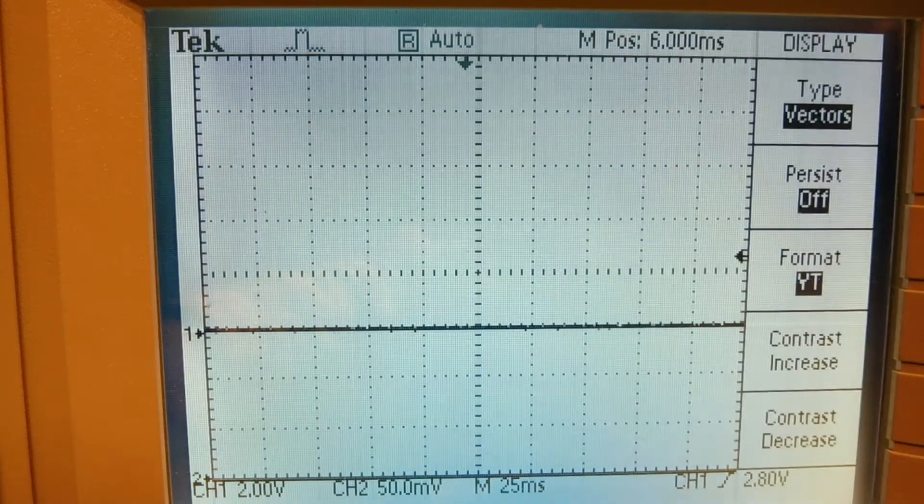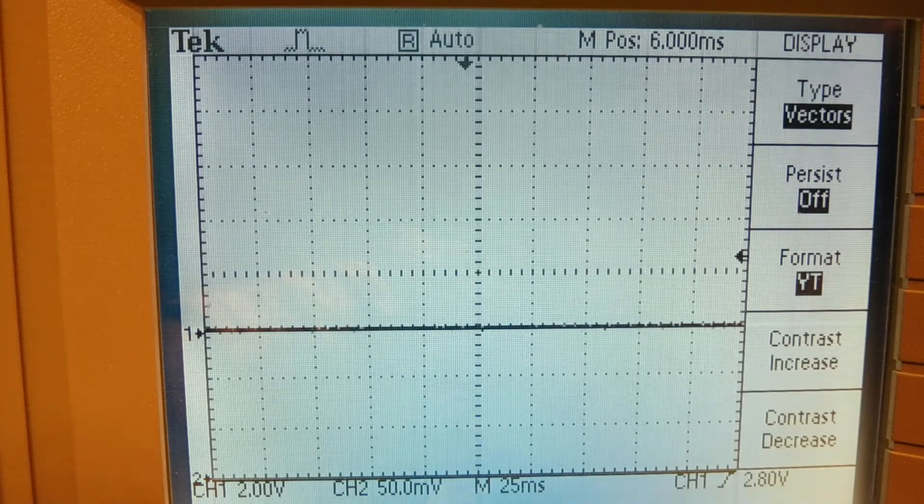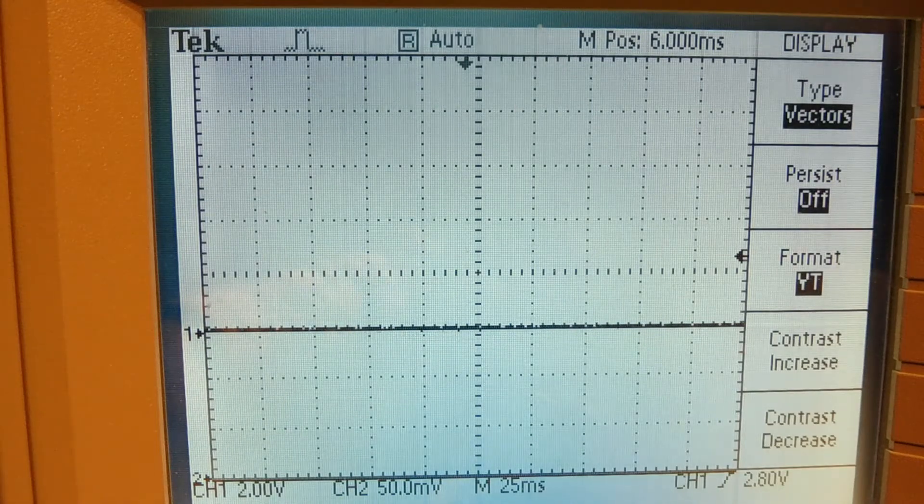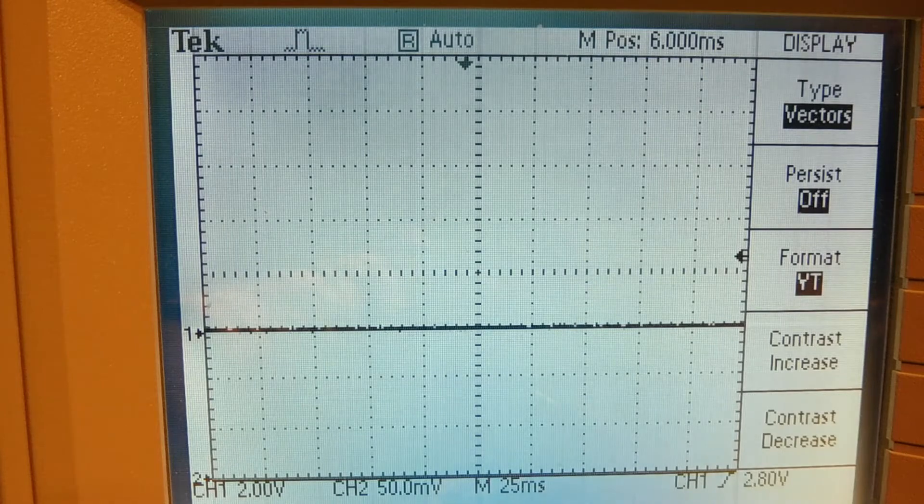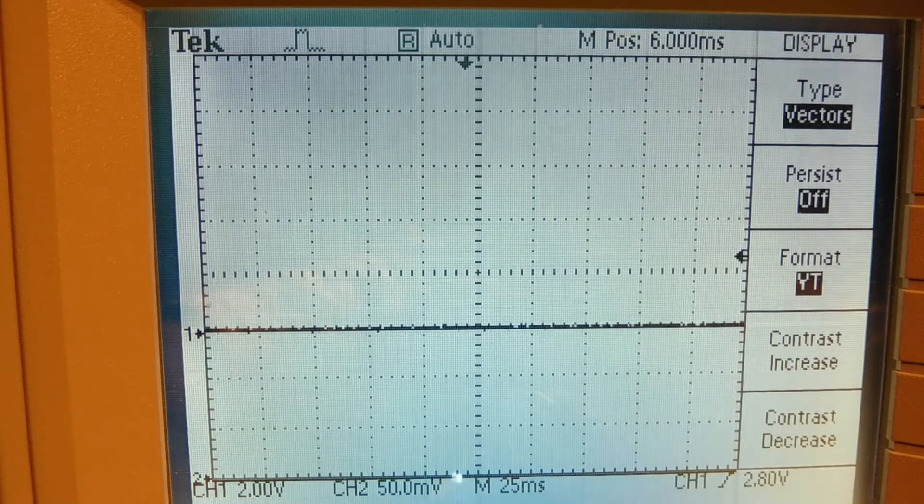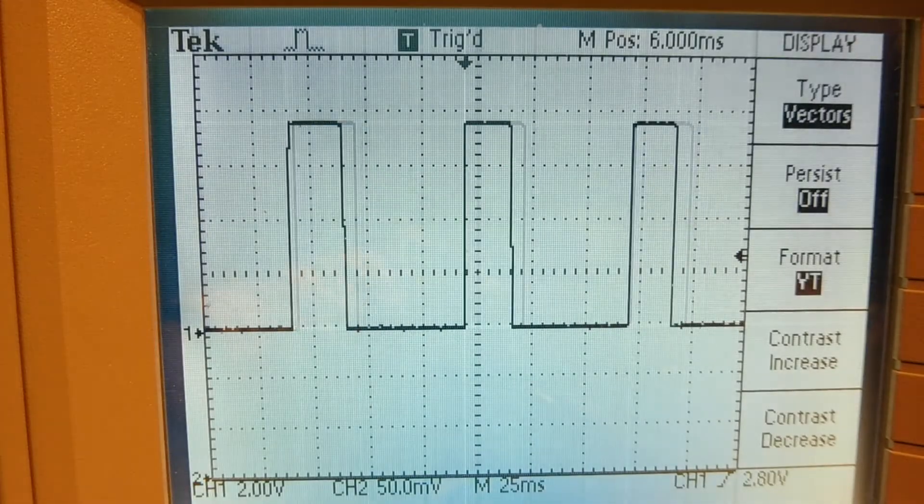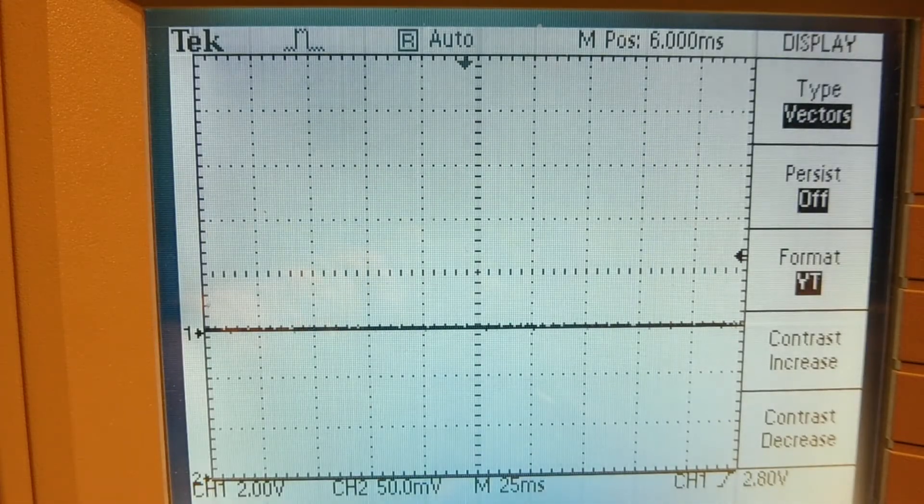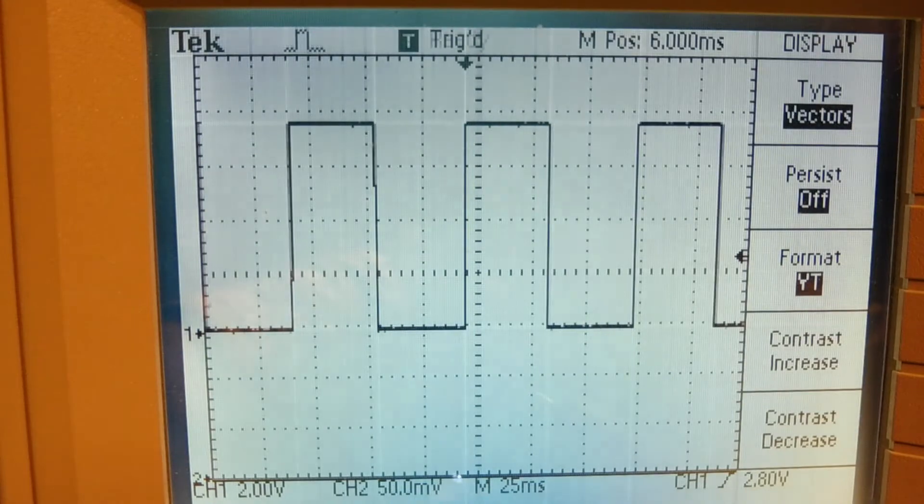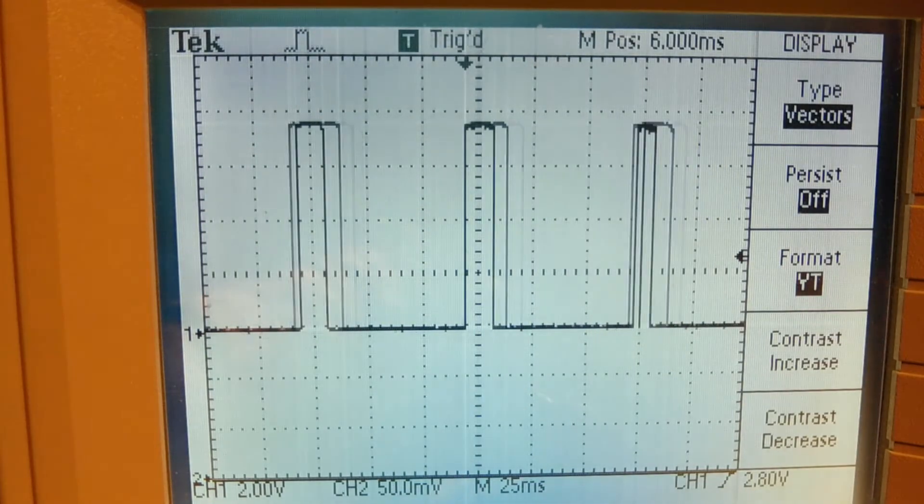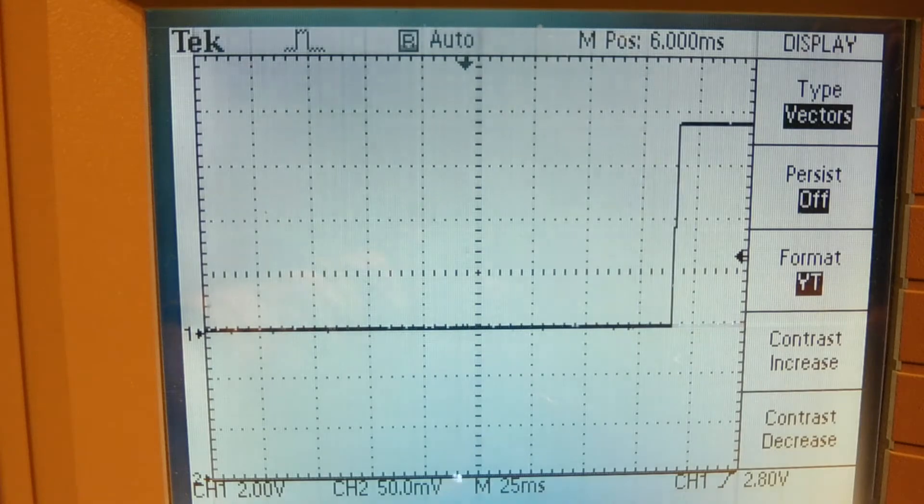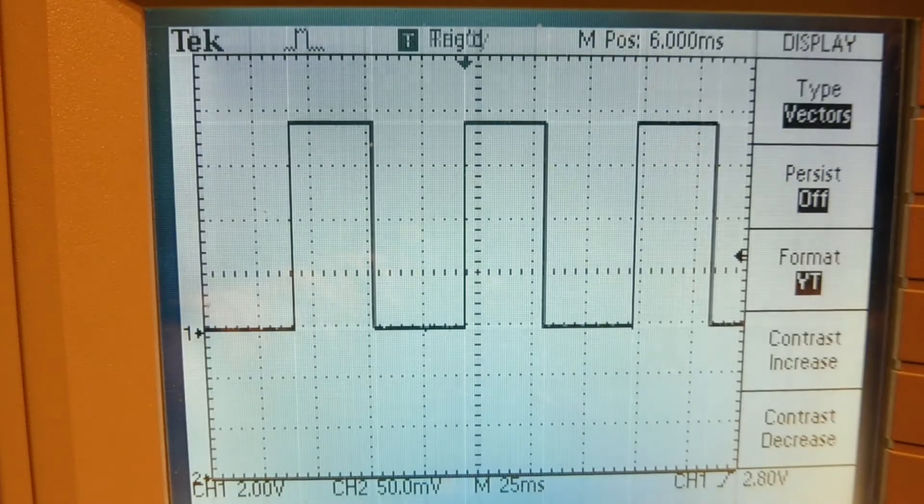Okay, I have my scope hooked up to the output of my sensor interface circuit and I'll flex the piezo cantilever and we'll see the output. I'll give it a flex. There it is there. So you can see we're getting rail to rail output. So it's taking the minute signal from the piezo and giving a rail to rail logic level output.